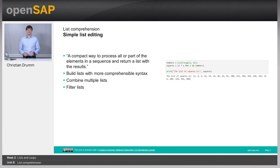Hello, welcome to Week 2, Unit 8: List Comprehensions. According to the Python documentation, a List Comprehension is a way to process all or parts of the elements in a sequence and return a list containing its results. We will see in this unit that we can use List Comprehension to build new lists using a very compact, comprehensive syntax. List Comprehensions are also quite useful to combine multiple lists or filter lists.